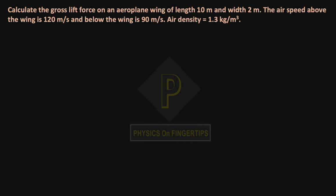Hello students, welcome to concept videos on Physics on Fingertips. Our question is: Calculate the gross lift force on an aeroplane wing of length 10 meter and width 2 meter. The air speed above the wing is 120 meter per second and below the wing is 90 meter per second. Air density equals 1.3 kilogram per meter cube.